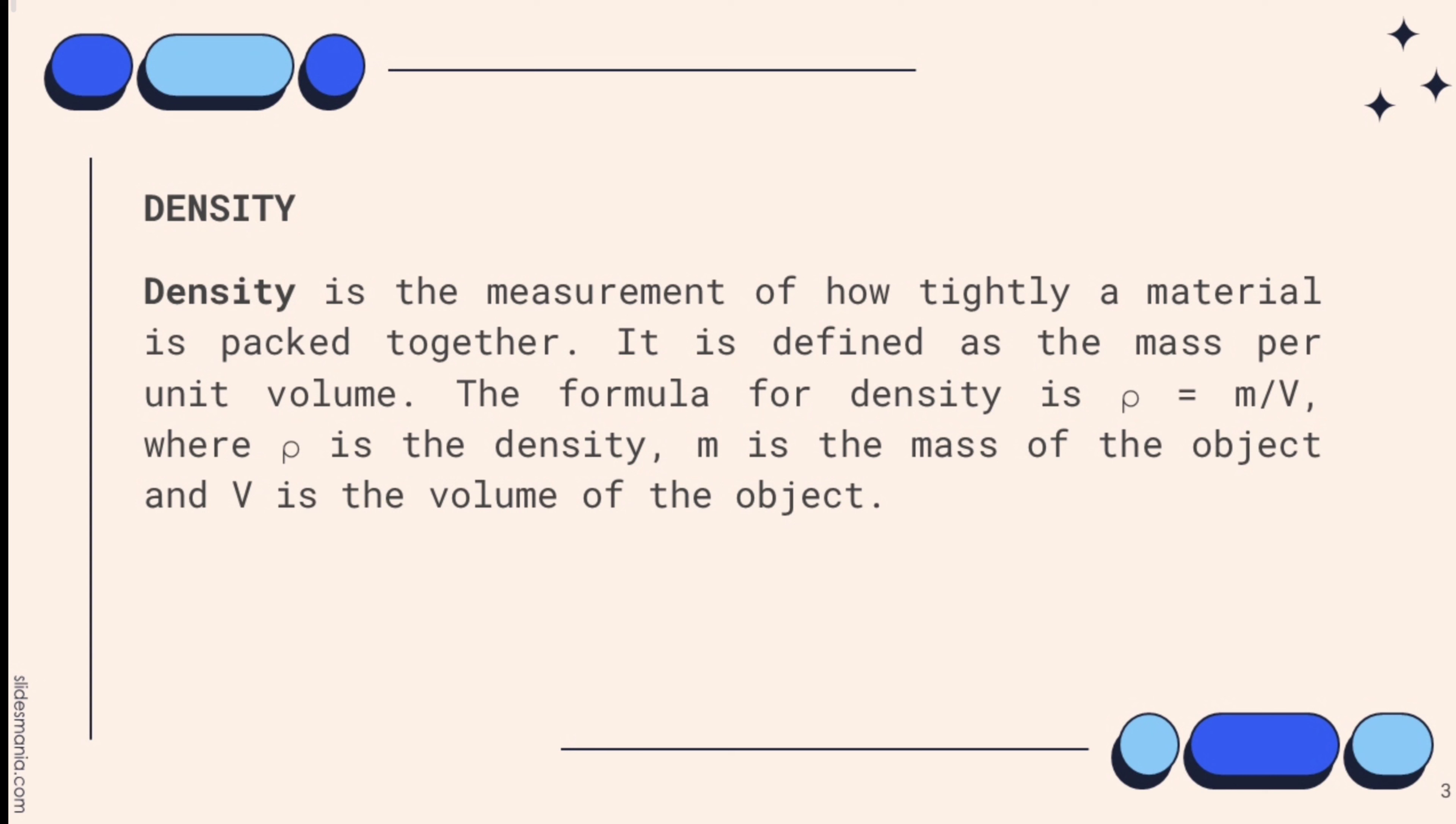Density is the measurement of how tightly a material is packed together. It is defined as the mass per unit volume. The formula for density is rho equals mass over volume, where rho is the density, m is the mass of the object, and v is the volume of the object.